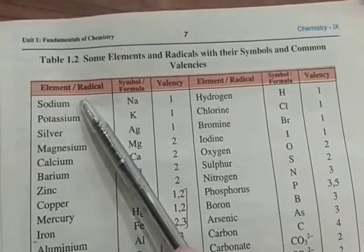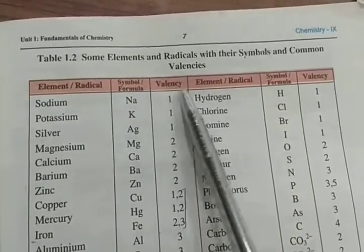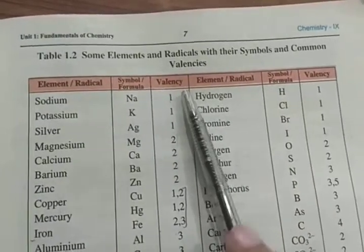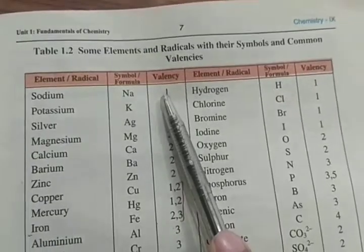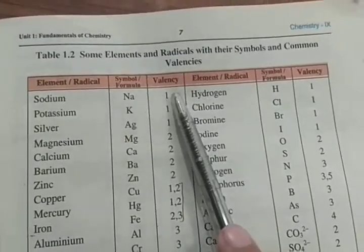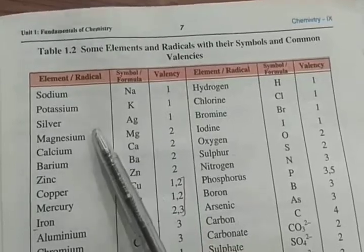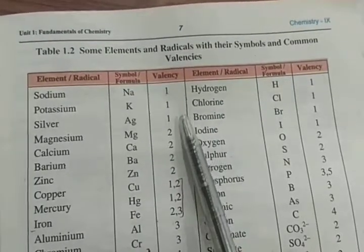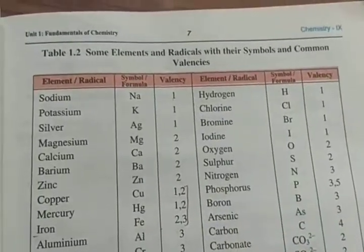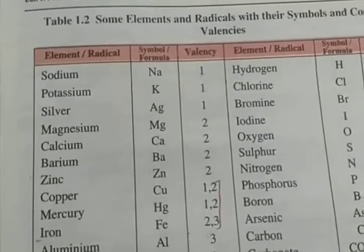Sodium - the symbol is Na and its valency is 1. In the outermost shell, there is one electron which can be lost. So the valency is 1. Similarly, potassium and silver in the outermost shell have one electron which can be lost. So what is the valency? 1.